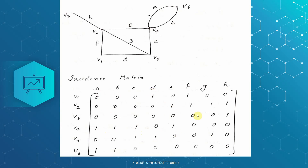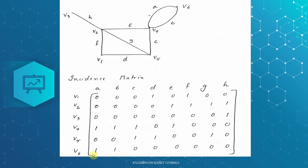Now, the sum of row vectors: the first row vector, second row vector, third row vector, fourth, fifth, and sixth row vectors. We will compute 1 plus 1, doing arithmetic in the incidence matrix. We will reduce the result mod 2.